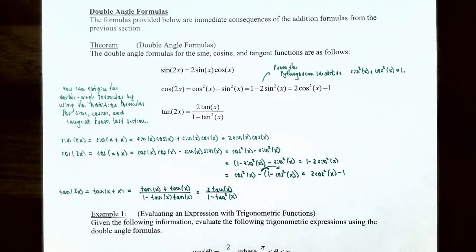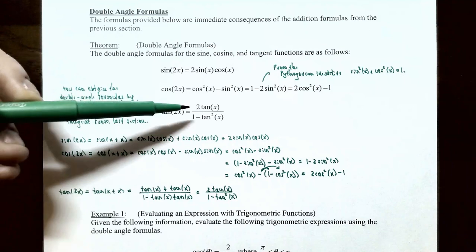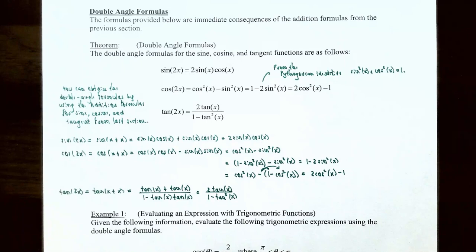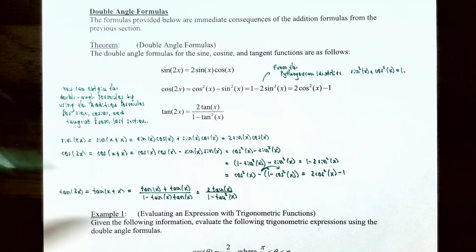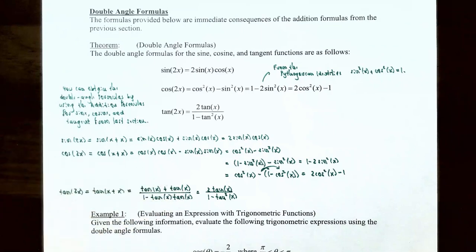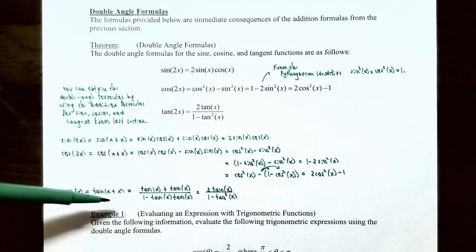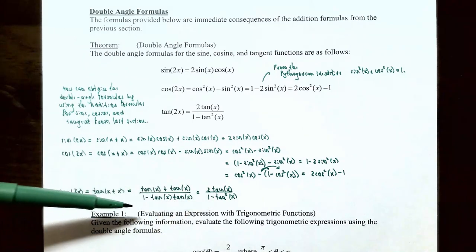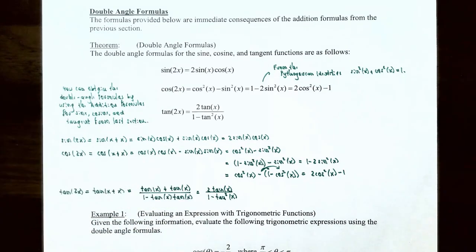The double angle formula for the tangent function: tangent of 2x equals 2 tangent x divided by the quantity 1 minus tangent squared x. This is obtained from the addition formula: tangent of x plus x equals tangent x plus tangent x in the numerator divided by 1 minus tangent x times tangent x, giving 2 tangent x over 1 minus tangent squared x.